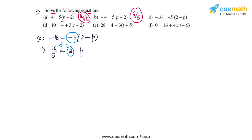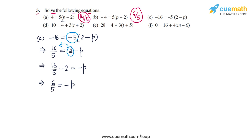We transpose the 2 to the left side so it becomes minus 2, giving us 16/5 - 2 on the LHS and minus p on the RHS. Writing 2 as 10/5, we get 16/5 - 10/5 = 6/5. So 6/5 = -p. Multiplying both sides by minus 1, we get p = -6/5. This is the solution to part c.